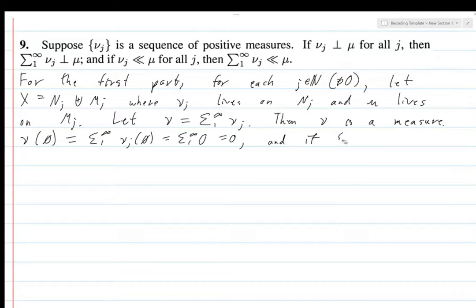And if E_j disjoint then nu of the disjoint union of the E_j's equals sum from 1 to infinity of nu_j, union j equals 1 to infinity E_j. Then this is equal to sum n equals 1 to infinity sum j equals 1 to infinity of nu_n of E_j's and because these are all positive we can flip the order of the sums